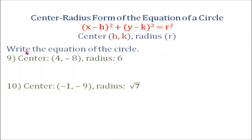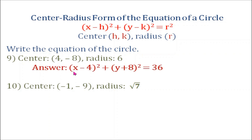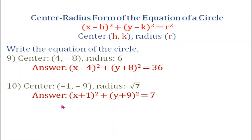Number 9: center at coordinates 4 and negative 8, radius 6. The equation is the quantity x minus 4 squared plus the quantity y plus 8 squared equals 36. Number 10: center at coordinates negative 1 and negative 9, radius square root of 7. The equation is the quantity x plus 1 squared plus the quantity y plus 9 squared equals 7.